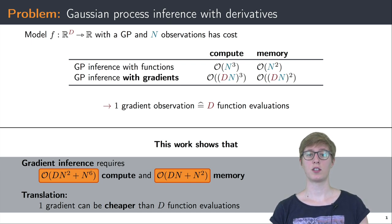Because of the high cost, gradient observations in GPs are not very common, especially as the dimension grows.